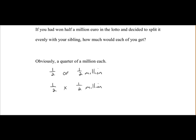So when we're multiplying fractions, what we do is we multiply the top by the top. So the top numbers here are 1 multiplied by 1, and we multiply the bottom numbers by each other also. So it would be 2 multiplied by 2. So 1 by 1 is 1, 2 by 2 is 4. That gives us a quarter of a million.